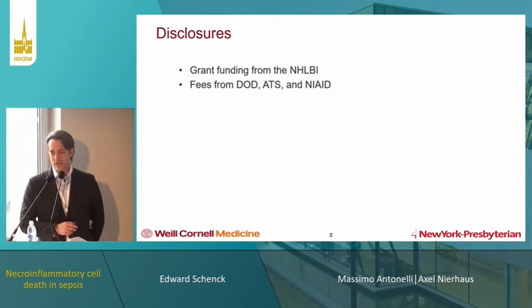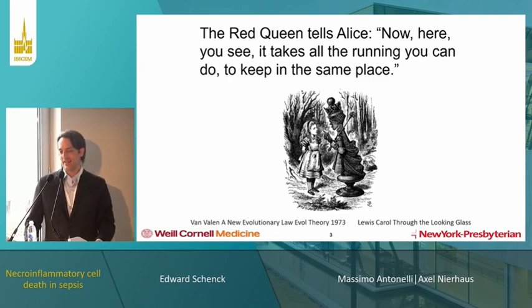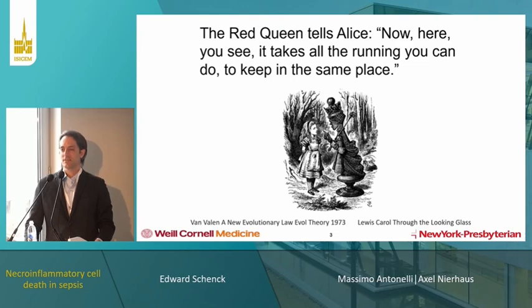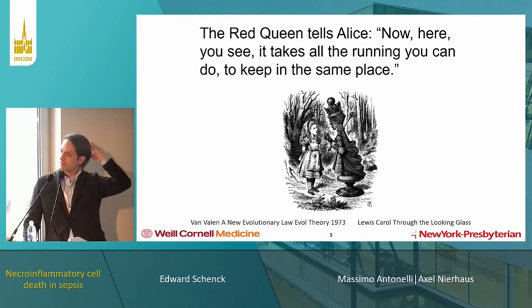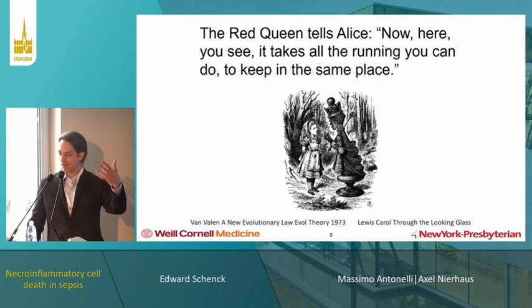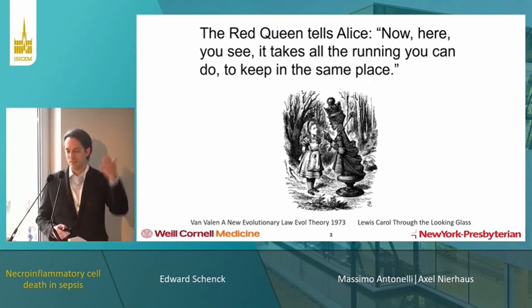Let's start with a little tale. The Red Queen tells Alice: it takes all the running you can do to keep in the same place. This is the Red Queen hypothesis, which since the early 1970s by Van Valen has been an approach to consider eukaryotic cellular evolution — how constant pressure from pathogens creates an evolutionary arms race in which eukaryotic organisms evolve one mechanism to deal with a pathogen, while pathogens develop counter-mechanisms in response.